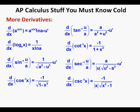More derivatives: d/dx of a^(u(x)) equals a^(u(x)) times ln(a) times u prime. d/dx of log base a of x equals 1 over (x times ln(a)). d/dx of inverse sine of (u/a) equals 1 over the square root of (a² minus u²) times u prime. d/dx of inverse cosine of x equals negative 1 over the square root of (1 minus x²). d/dx of inverse tangent of (u/a) equals a over (a² plus u²) times u prime. d/dx of inverse cotangent of x equals negative 1 over (1 plus x²). d/dx of inverse secant of (u/a) equals a over the absolute value of u times the square root of (u² minus a²) times u prime. d/dx of inverse cosecant of x equals negative 1 over the absolute value of x times the square root of (x² minus 1).